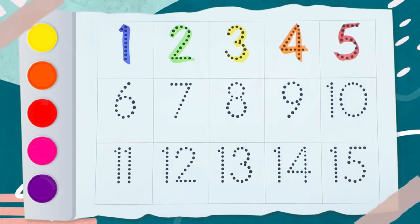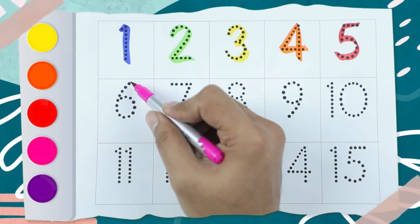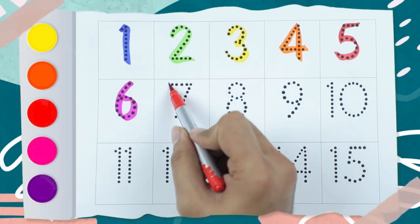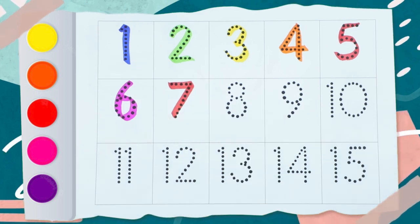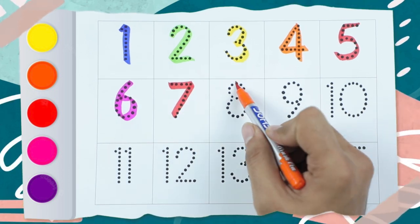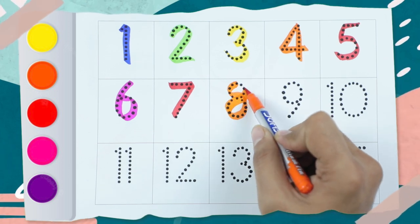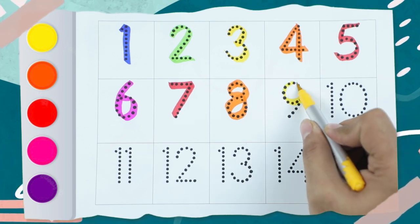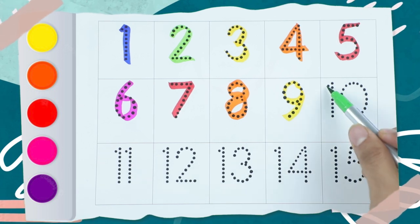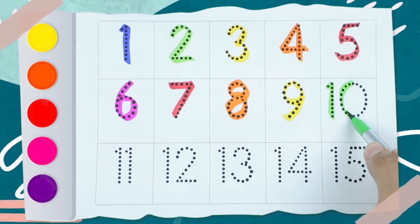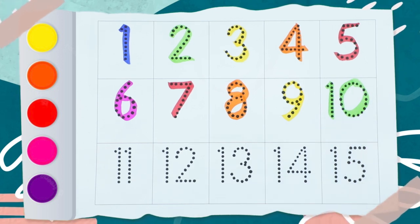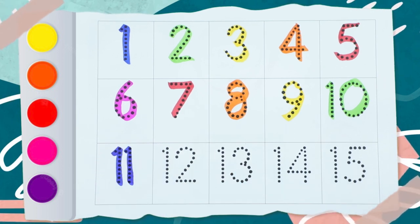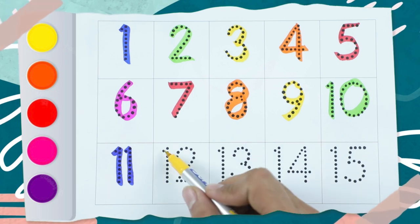Now pink color — 6, number 6 is red color. Number 7 is orange color. Number 8 is yellow color. Number 9 is green color. Number 10 is blue color.